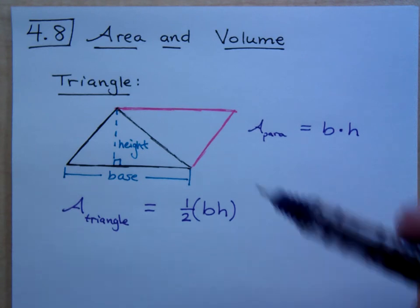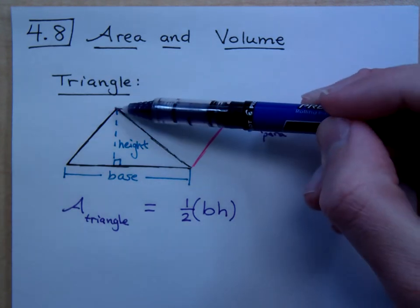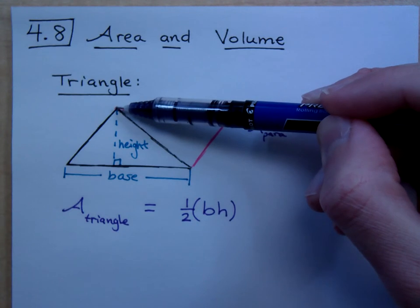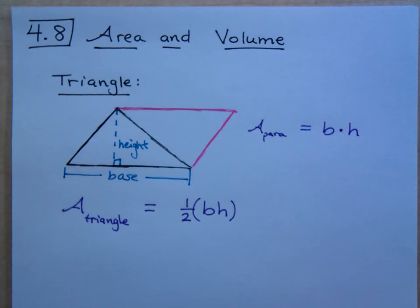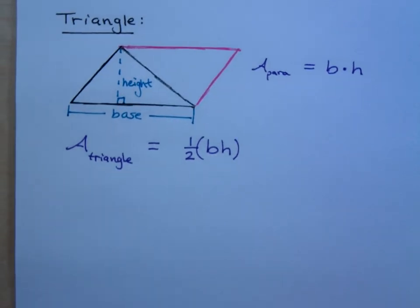Now, remember, the height is always going to be the distance from the top vertex down to the base. Sometimes it's inside the triangle, sometimes it's outside. So, we're going to look at a few examples of this, and we're going to come up with the area for a triangle.